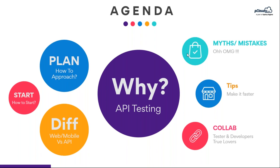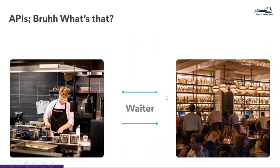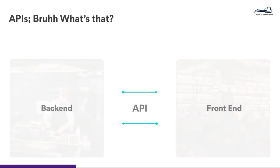Let's start with the basics — what is an API? Whenever we go to a restaurant, one side is the cooking area and the other side is the dining area. We don't go directly to the cooking area to place an order. There's a mediator — the waiter. We tell the waiter what we want, and he goes to the kitchen and comes back with the food. Similar things happen in software.